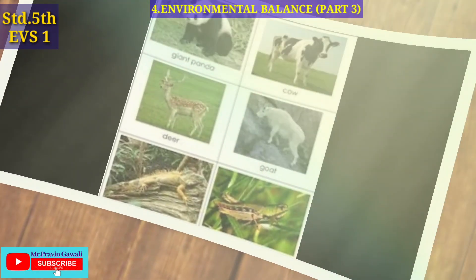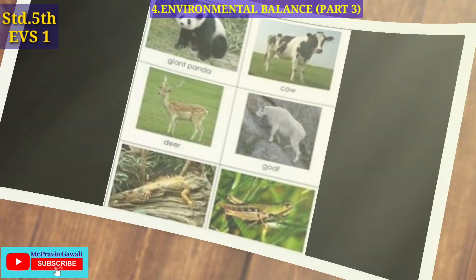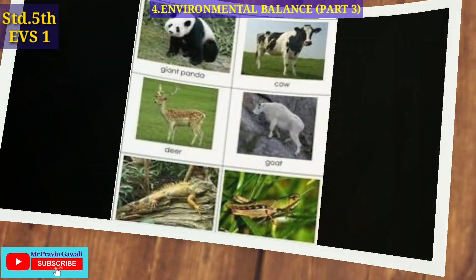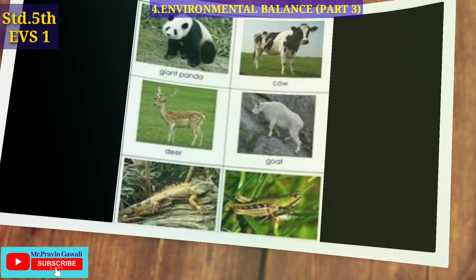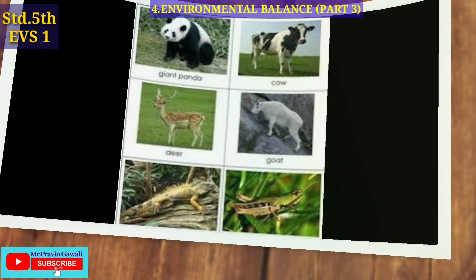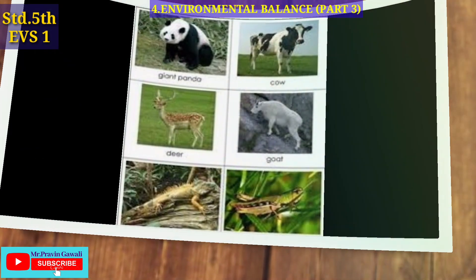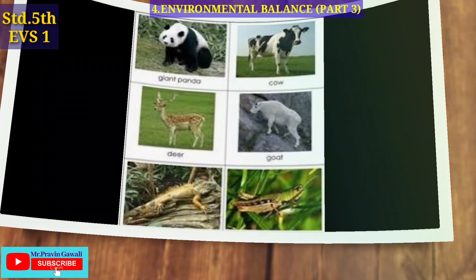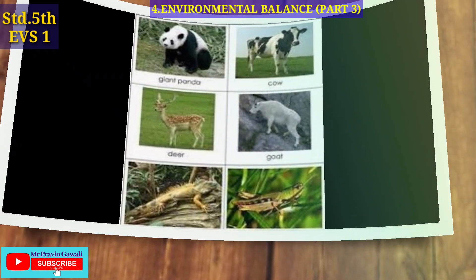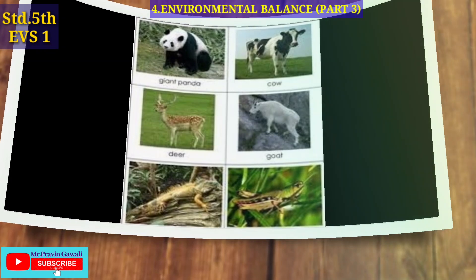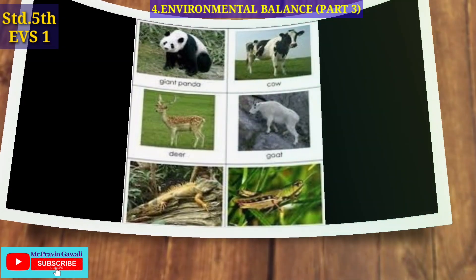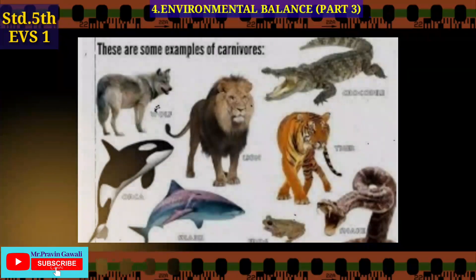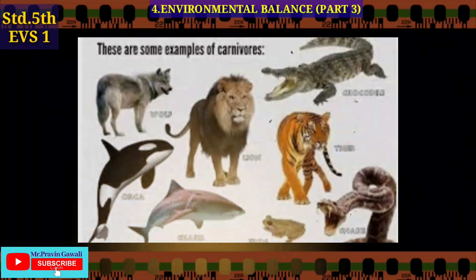Many animals in the environment eat only plants. The animals that eat only plants are called herbivores. For example, deer, grasshoppers, and rabbits are all examples of herbivores.